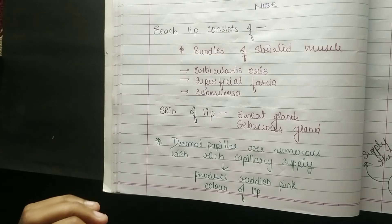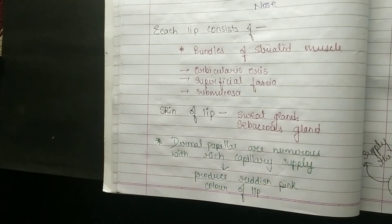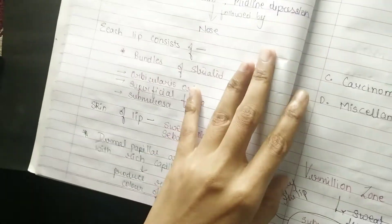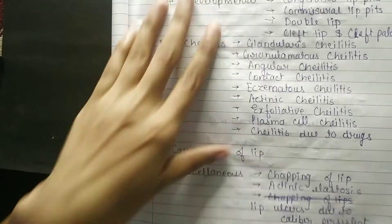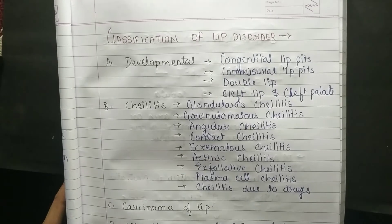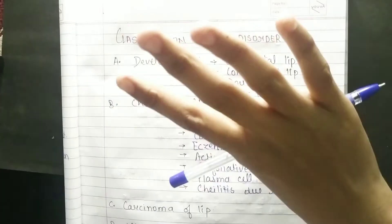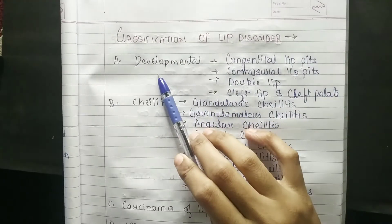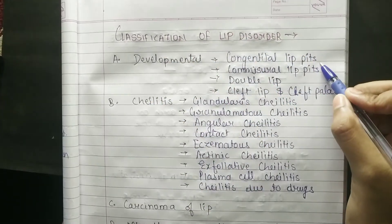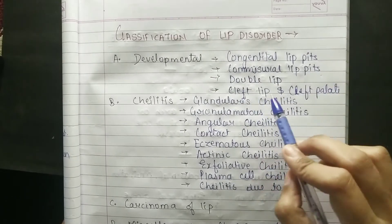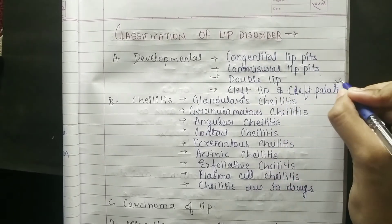So these are some simple basic things you have to remember. Now coming to the classification of lip disorders. The classification is divided into four ways. First is developmental, which includes: congenital lip pits, commissural lip pits, double lip, and cleft lip and cleft palate — which is really, really important. These three things you have to remember, and cleft lip and cleft palate will have long notes.